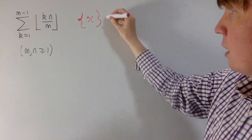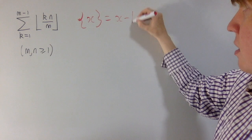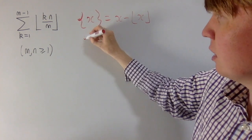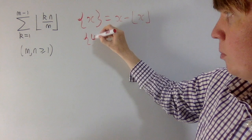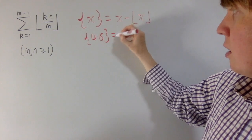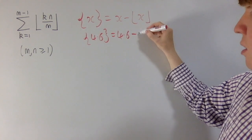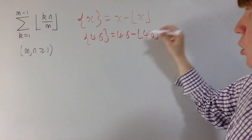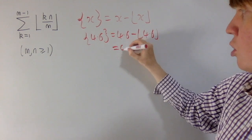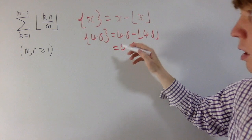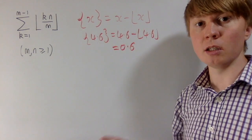We've defined this as the number minus its integer part. Just to illustrate this with an example, let's say we're interested in the decimal part of 4.6, and this is 4.6 minus the floor function of 4.6, or 4.6 minus 4, which is 0.6. So it's just getting rid of the integer part.